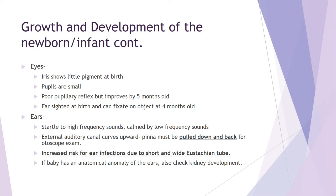If a baby has an anatomic anomaly of the ears — meaning the ears aren't shaped right or are malformed — the kidneys and ears develop at the same time in utero. So if you notice an abnormality with the shape of the ears during a newborn assessment, flag it for the provider because you should also check the kidneys. It may indicate a developmental interruption that occurred while they were in utero.